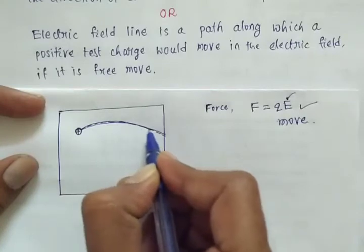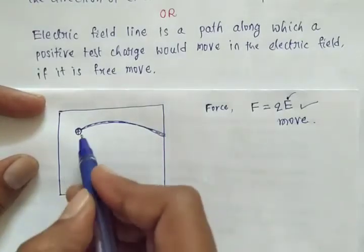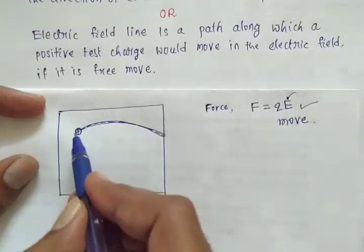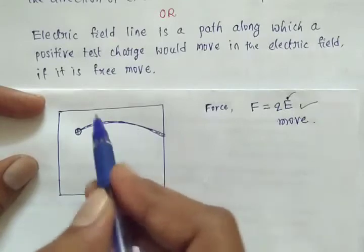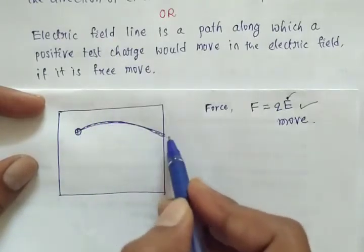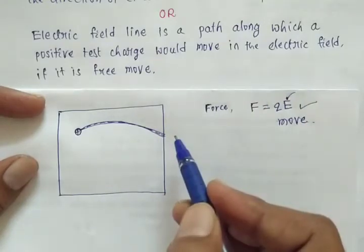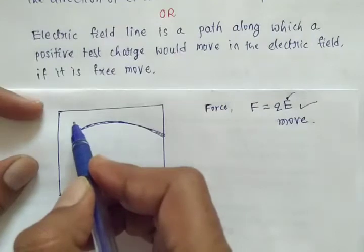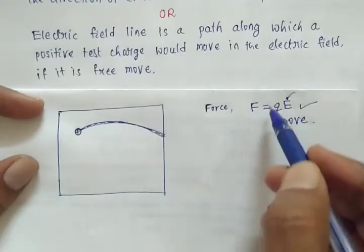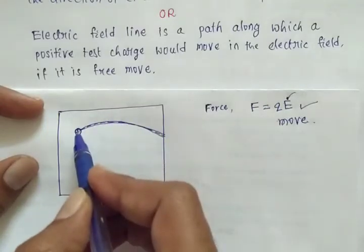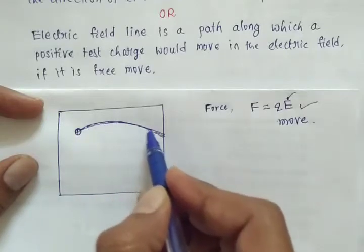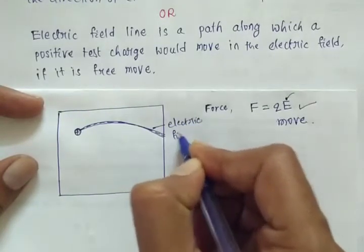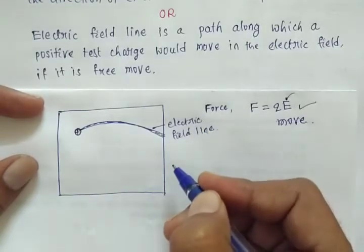This line is called an electric field line — the path along which a positive test charge would move in the electric field if it is free to move, acted on only by the electric force.